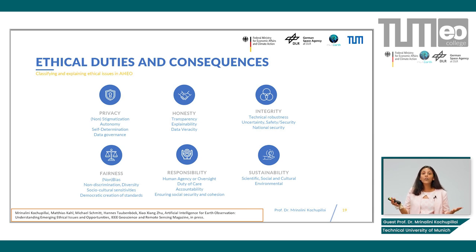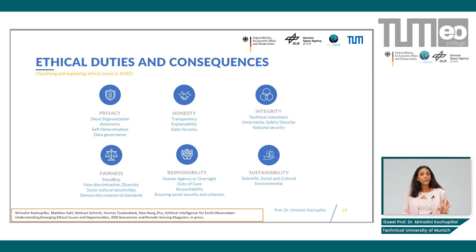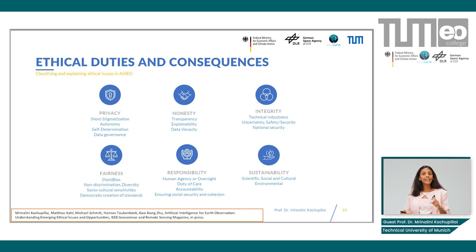The principles found to be common across these texts were enumerated and classified under five different categories. The first category was privacy — under privacy we have issues such as stigmatization, autonomy, self-determination, and data governance. In the second category we put honesty. Remember the three principles of ethics: honesty, integrity, and fairness. These created our next three classifications after privacy, and under these we also designated sub-issues that might arise if these ethical duties are not complied with.